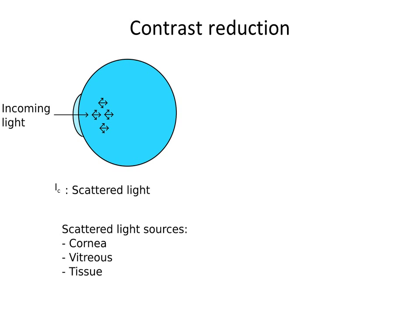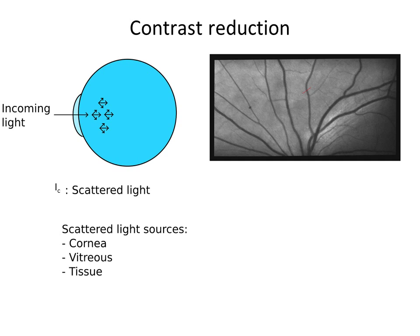Secondly, we have the contrast reduction, which is basically scattered light from sources like the cornea, the lens, the vitreous, or even tissue. This scattered light introduces an offset in intensity. Here we have a regular retinal image, and with this added offset, it would look like that.